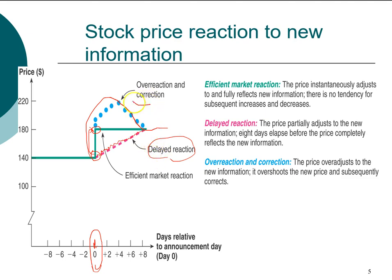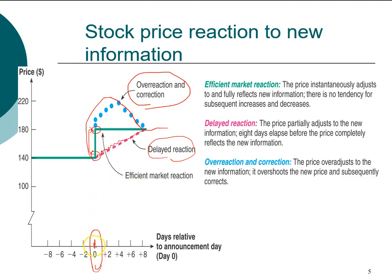Either an overreaction or a delayed reaction are both evidence that the stock market is not semi-strong form efficient. This is how researchers look at a news announcement, observe how the stock price reacts, and draw conclusions about market efficiency.